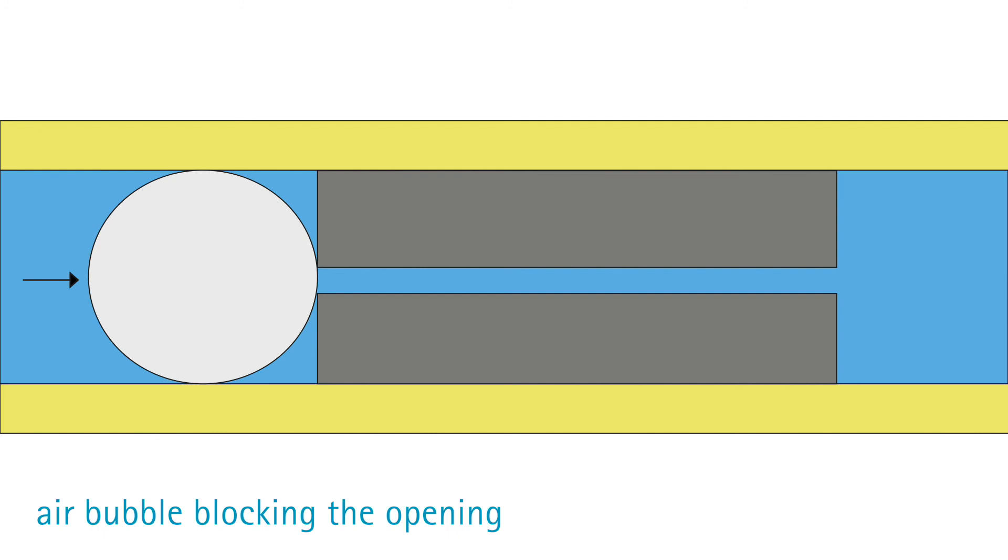A large bubble could easily block the restrictor opening, causing the system to leak if the amplitude is too high and you force them through under pressure. There are two solutions to prevent that issue.